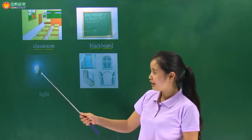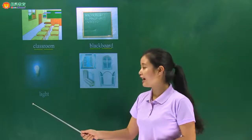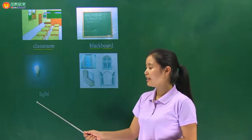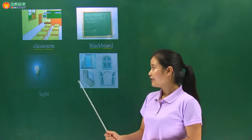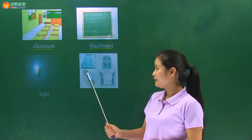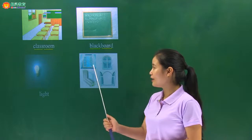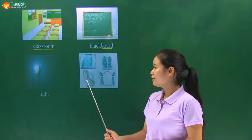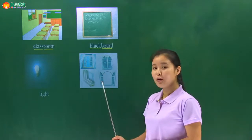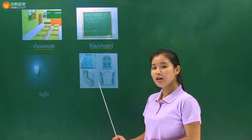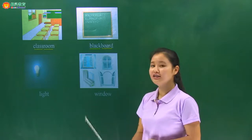Look at this picture，It is a light，它是一个灯，light. Next one，look at this picture，这幅图里面有窗户，window.